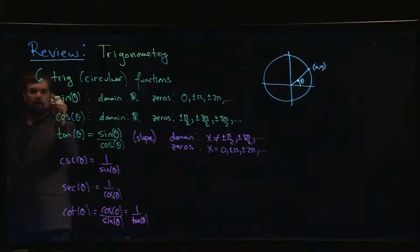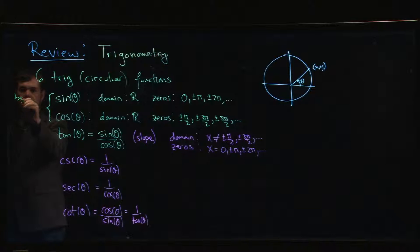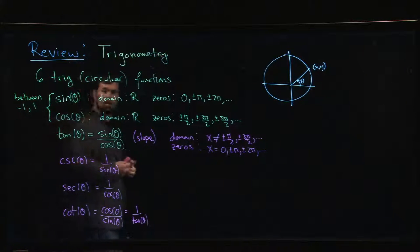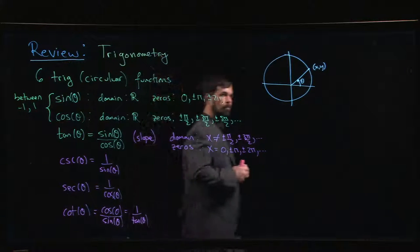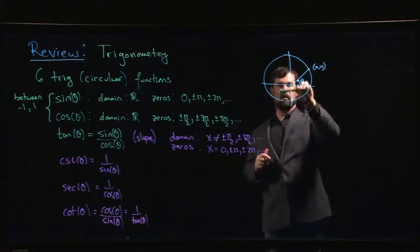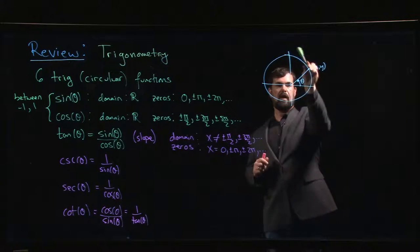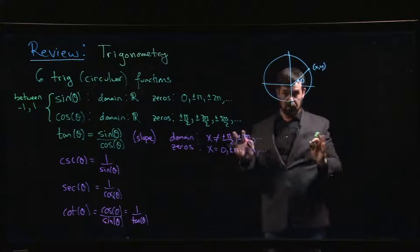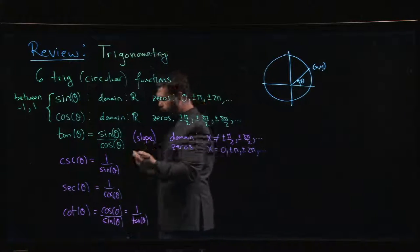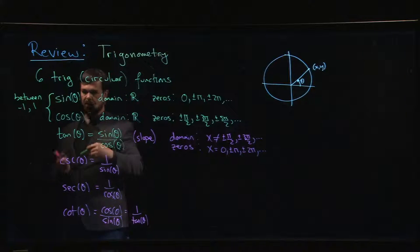A couple more things about these functions: sine theta and cosine theta are always between minus 1 and 1, because they are coordinates on the unit circle, and the x and y ranges for the unit circle are minus 1 to 1. So these two functions are what's called bounded.